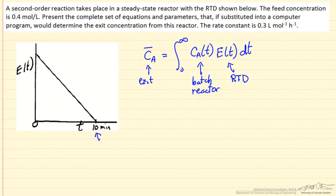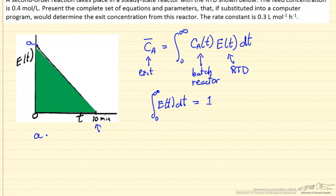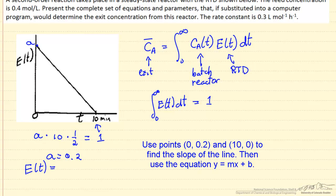We need to do several things here. First, we determine E(t). We need an equation for this straight line and a scale for the y-axis. The integral of E(t) dt from 0 to 10 must equal 1, because all probabilities must sum to 1. Labeling the peak value A, the area of the triangle is A times 10 times one-half, which equals 1, so A equals 0.2. Therefore our residence time distribution is E(t) = 0.2 − 0.02t.